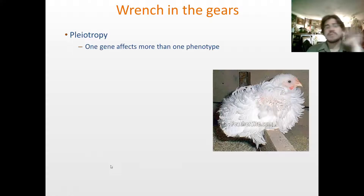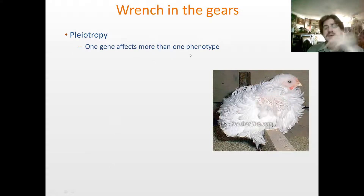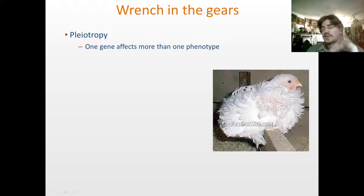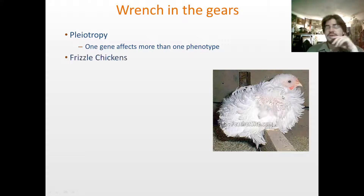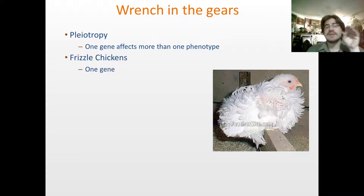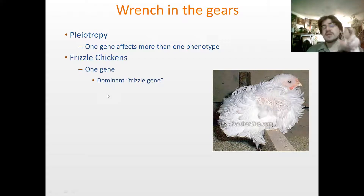Next up: pleiotropy. Pleiotropy is where one gene affects many phenotypes. Here's the frizzle chicken — that is literally the name for this breed. The frizzle chicken looks kind of like it got electrocuted recently. Frizzle chickens have a single gene that can affect a large number of different phenotypes.